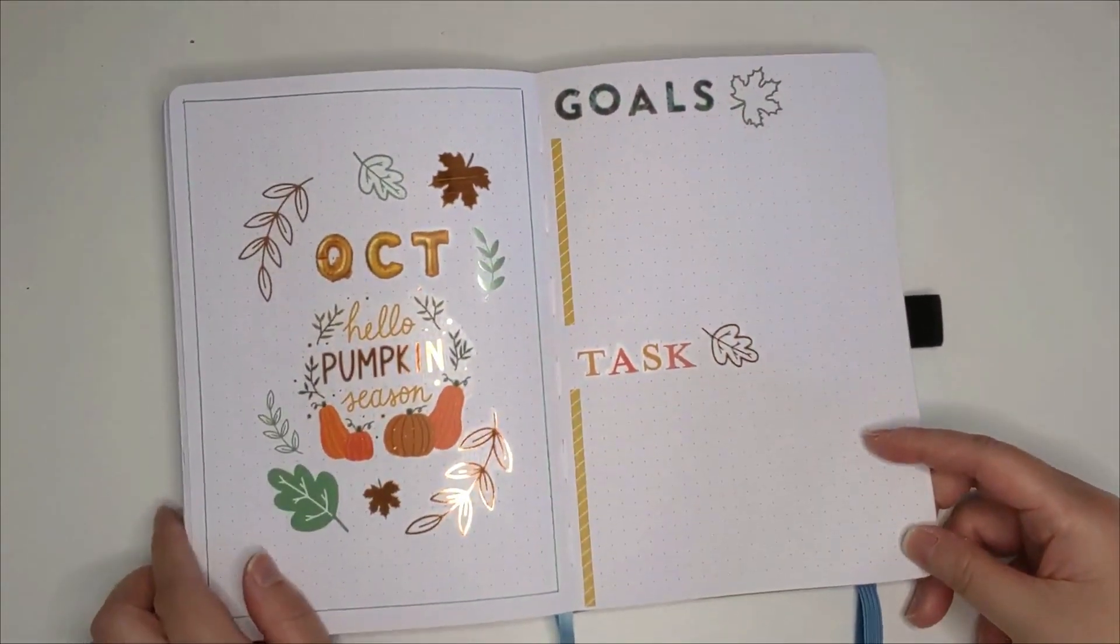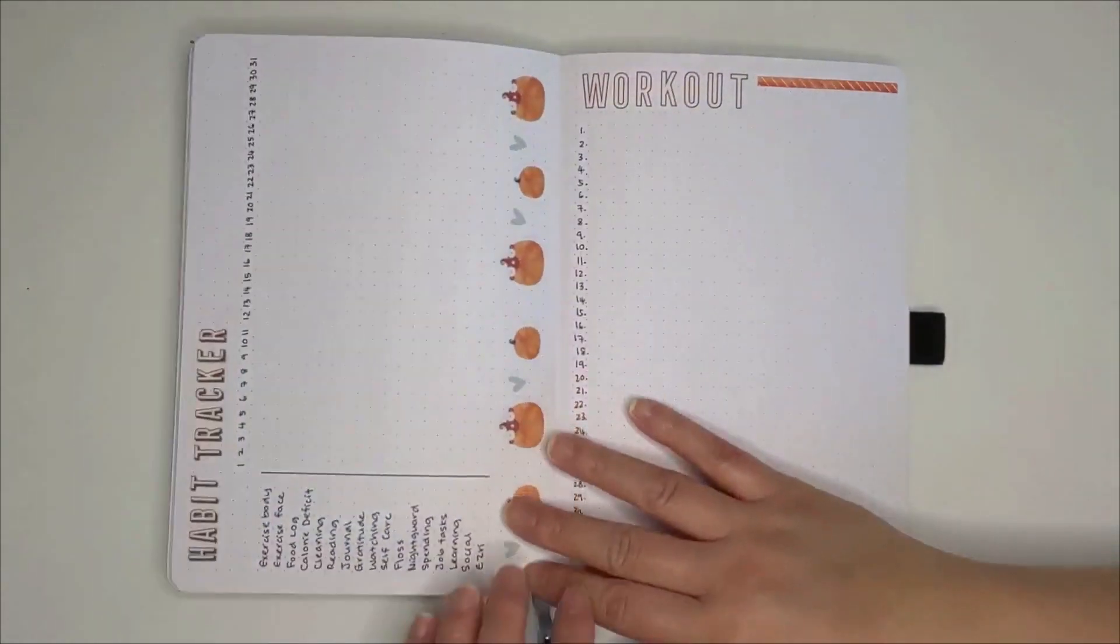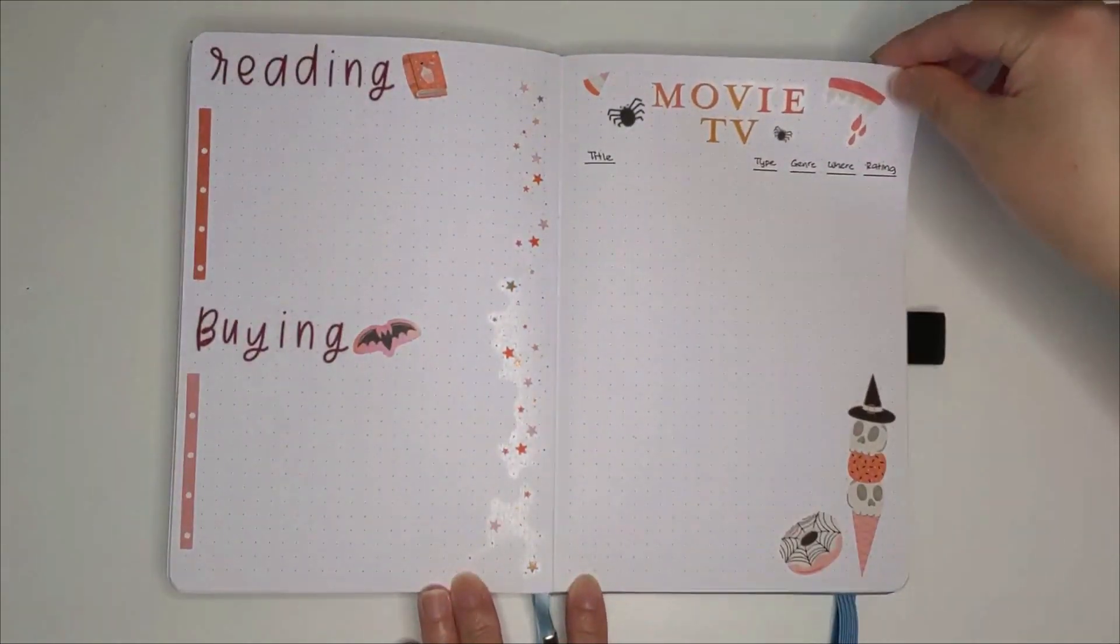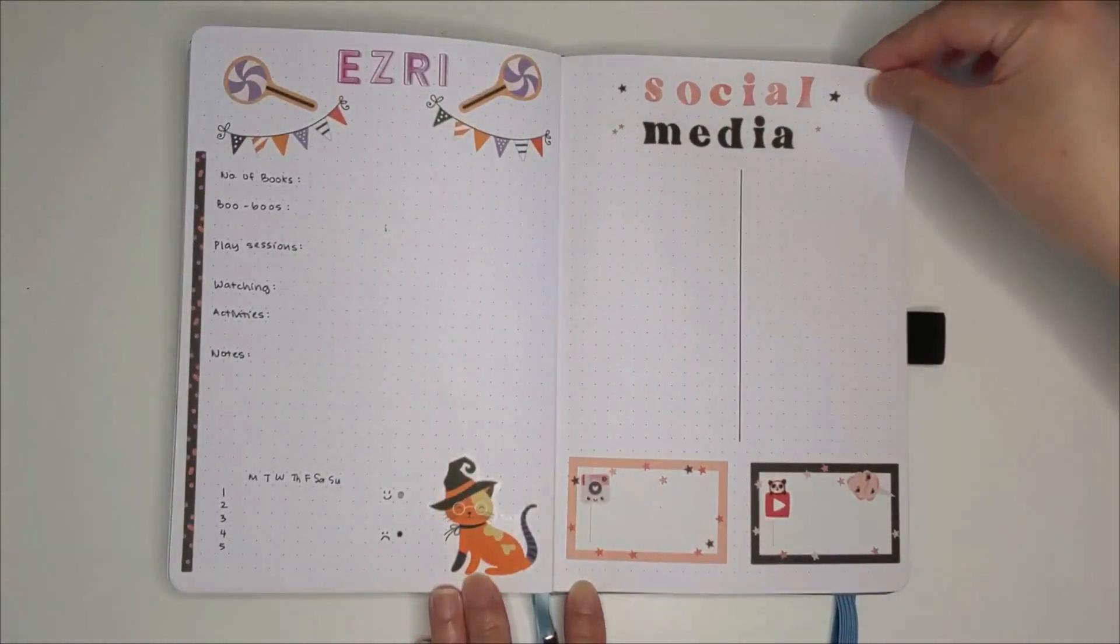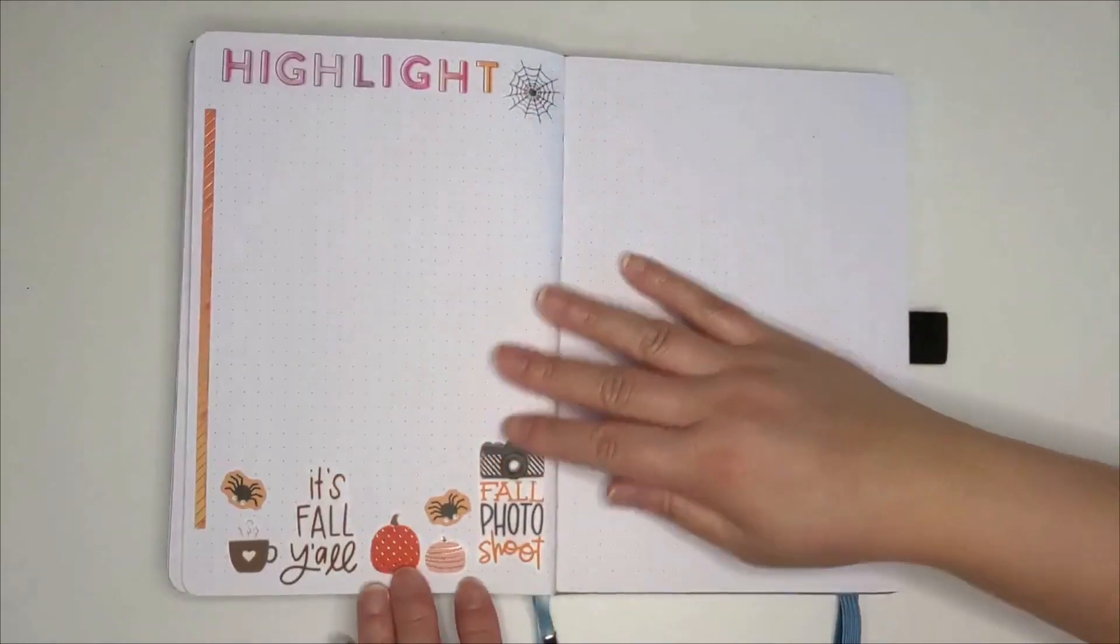So that's my October bullet journal setup. Here's a quick flip through of the pages. I hope you've enjoyed the video. If you do, do give me a thumbs up. And if you want to watch more of my videos, do subscribe to my channel so that you'll be notified of future videos. With that, I'll see you in the next video. Bye!